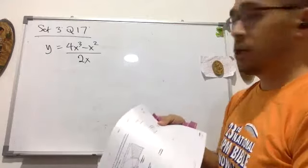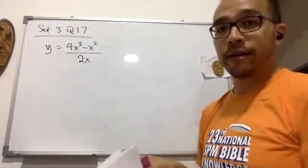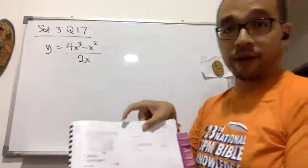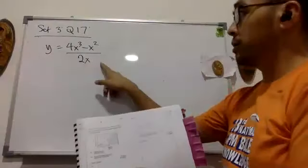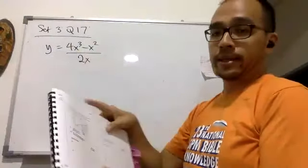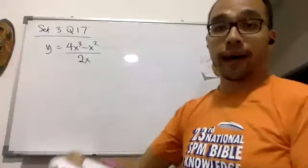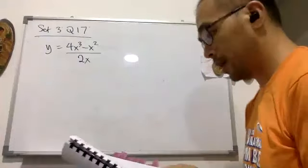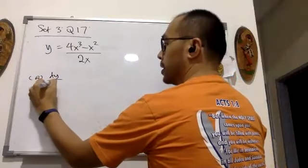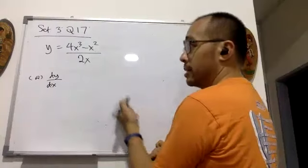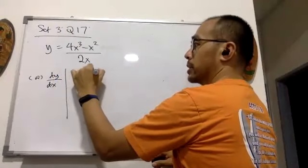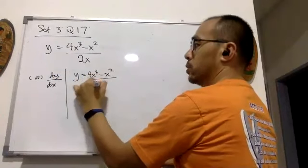On page 23, the function is given by the equation, which is a bit unclear in the book, so rewrite it. The function is y = (4x³ − x²) / 2x. The first question is to find dy/dx, but in order to find dy/dx, we need to simplify this first. It's an easy simplification.